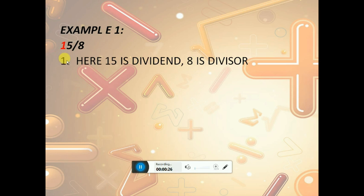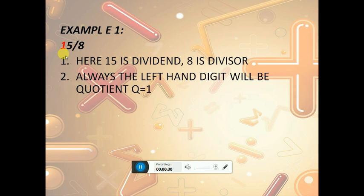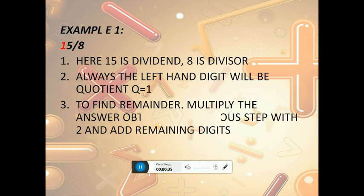Considering the first example, 15 by 8. Here 15 is the dividend and 8 is the divisor. Always the left-hand digit will be the quotient, so quotient q equals 1.